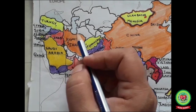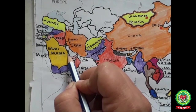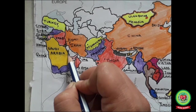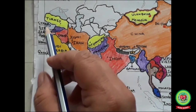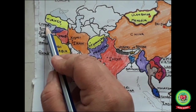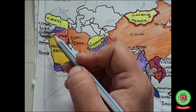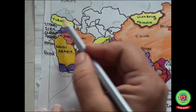Qatar is a peninsular Arab country whose terrain comprises arid desert and a long Persian Gulf shoreline of beaches and dunes. The country has the highest per capita income in the world. Its capital is Doha. The last one is Cyprus — known as the jewel of the Mediterranean — and its capital is Nicosia. So students, these are the Western countries of Asia.